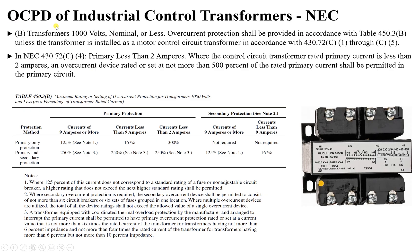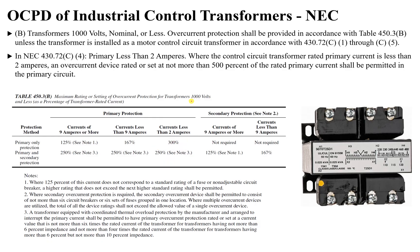NEC 430.72(C)(4) addresses sizing the overcurrent device. The table shows values of 300% and 250% for primary currents, but it says: where the control circuit rated primary current is less than 2 amperes, use an overcurrent device rated or set at not more than 500% of the primary current — instead of the standard 300%. This exception exists because these smaller transformers have higher inrush currents. Understanding this NEC rule is essential for correctly sizing overcurrent protection for industrial control transformers.